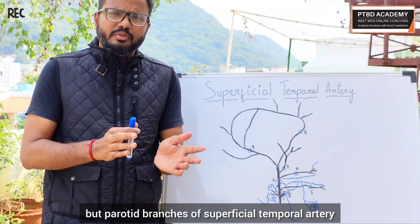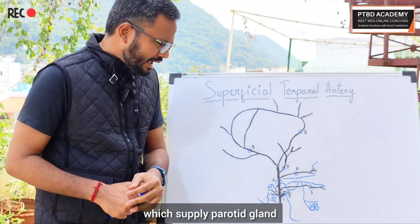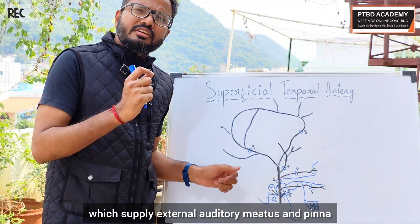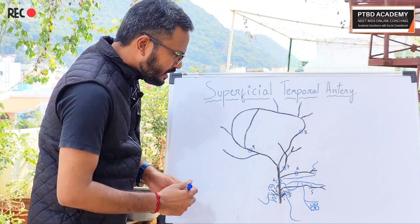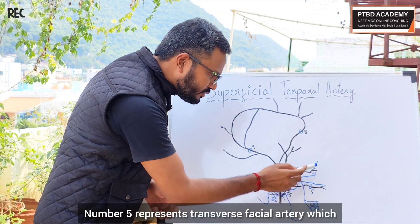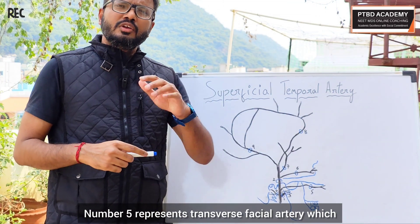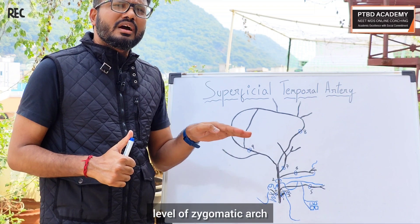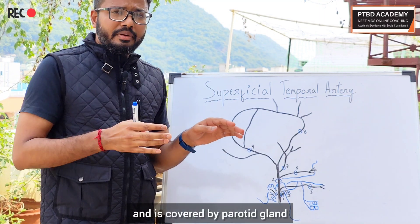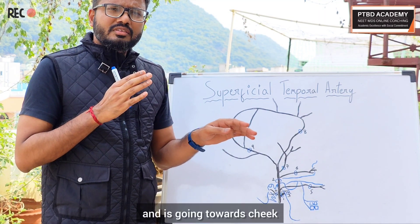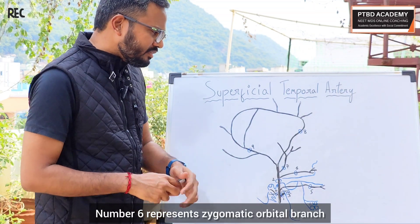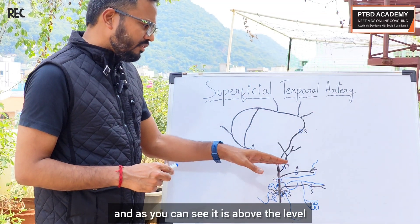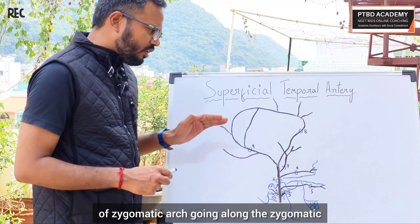Number three represents the parotid branches of the superficial temporal artery, which supply the parotid gland. Number four is the anterior auricular branches, which supply the external auditory meatus and pinna. Number five represents the transverse facial artery, which is located below the level of the zygomatic arch, is covered by the parotid gland, and goes towards the cheek.